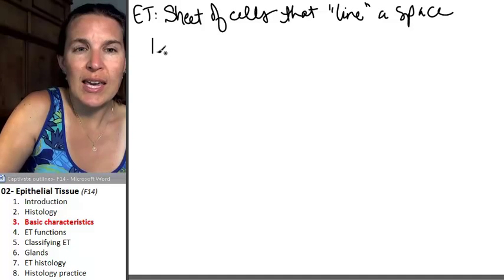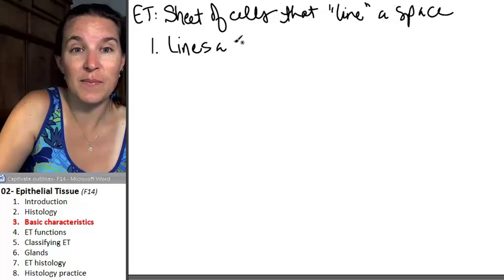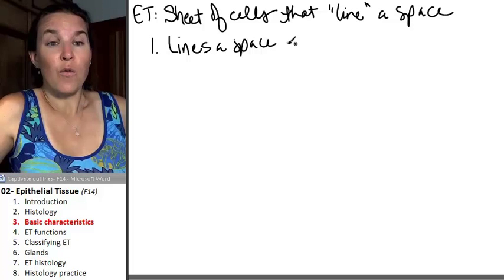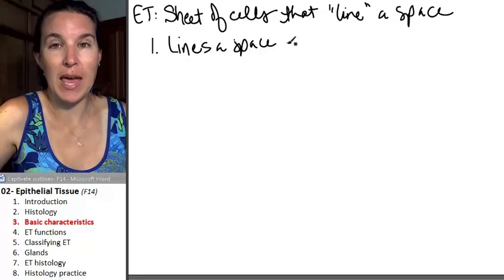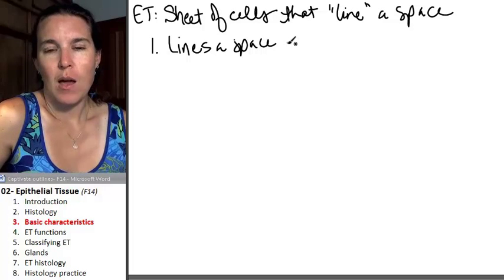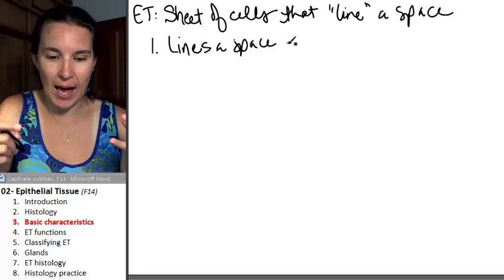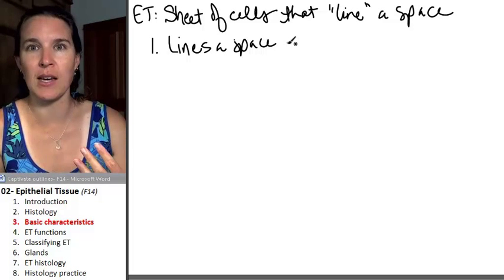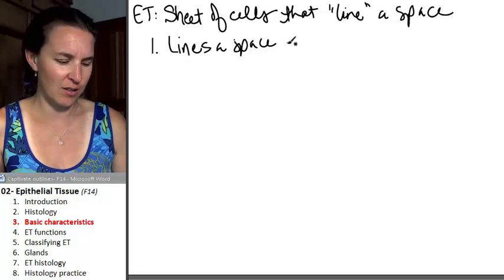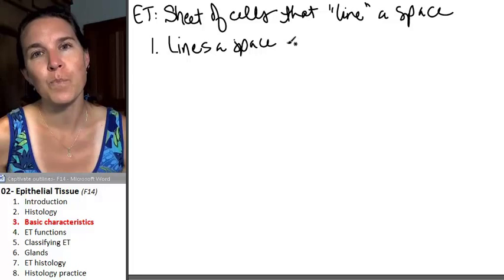So characteristics of epithelium: you're always going to see it next to a space. Now, I say that for baby histology students. That's you guys. For baby histology students, sometimes we look at a slice of something and there's a giant space in it, like right in the middle. And you're like, what is that? I'm looking at a chunk of muscle and there's this huge space in the middle. Why? I wouldn't expect a space there. It's not a space. It's an artifact of the process of making the slide in the first place.